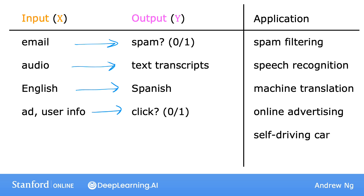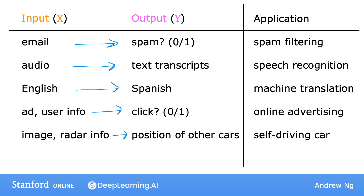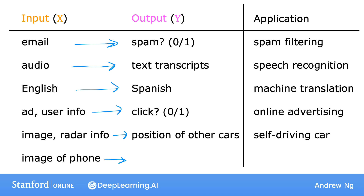Or if you want to build a self-driving car, the learning algorithm would take as input an image and some information from other sensors such as radar, and then try to output the position of other cars so your self-driving car can safely drive around them. Or take manufacturing — the learning algorithm can take as input a picture of a manufactured product, say a cell phone that just rolled off the production line, and output whether or not there is a scratch, dent, or other defect. This is called visual inspection, and it helps manufacturers reduce or prevent defects in their products.